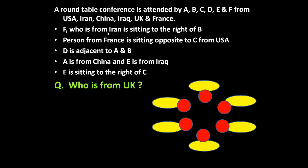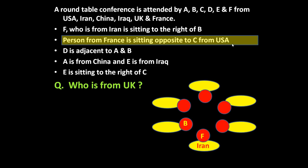The first statement is: F, who is from Iran, is sitting to the right of B. As it is a circular arrangement, you can start from any convenient point. Let us assume F occupies this position — F is from Iran and F sits to the right of B. Now let us go through the second statement: the person from France is sitting opposite to C from USA. We don't know where C is sitting, where France is, or where USA is, so we cannot incorporate this information presently. Let us underline this and come back to it.